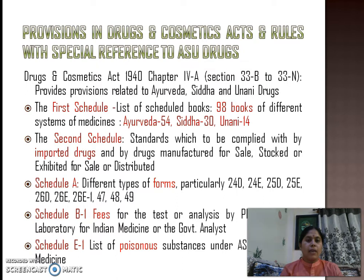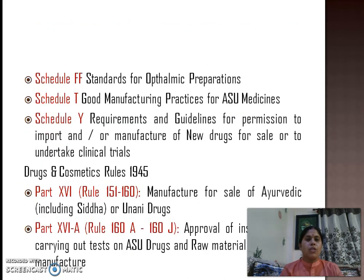Schedule A relates to different types of forms pertaining to ASU drugs, particularly forms 24D, 24E, 25D, 25E, 26D, 26E, 26E1, 47, 48, and 49. Schedule B1 relates to the fees for test or analysis by the pharmacopoeia laboratory for Indian medicine or the government analyst. Schedule E1 relates to the list of poisonous substances under ASU systems of medicines. Schedule FF covers standards for ophthalmic preparations. Schedule T, already discussed, relates to Good Manufacturing Practices for ASU medicines and must be strictly complied with by all ASU manufacturers. Schedule Y relates to requirements and guidelines for permission to import and/or manufacture new drugs for sale or to undertake clinical trials.